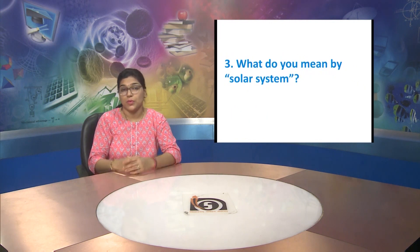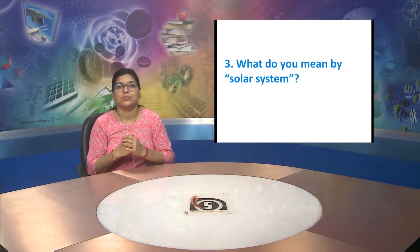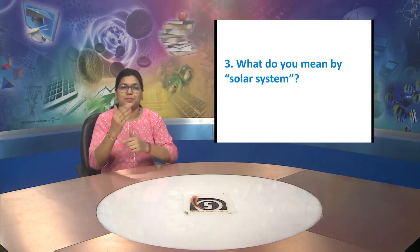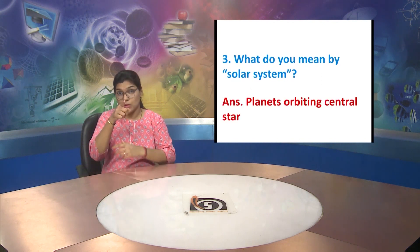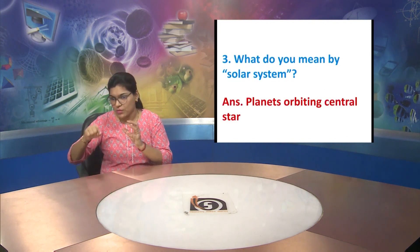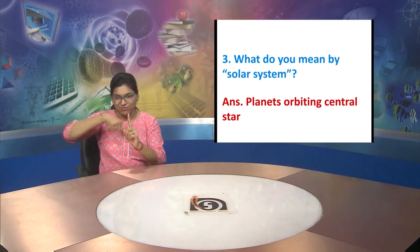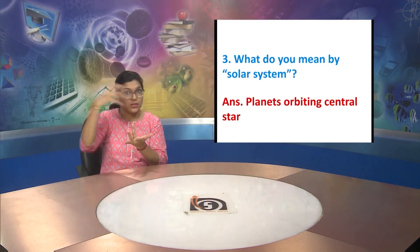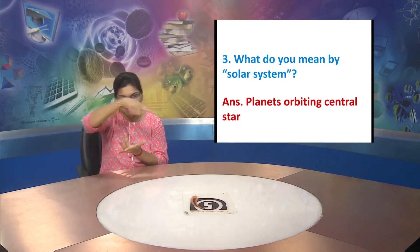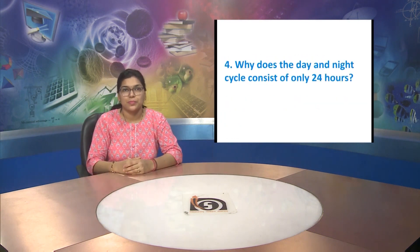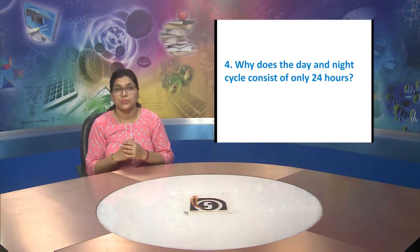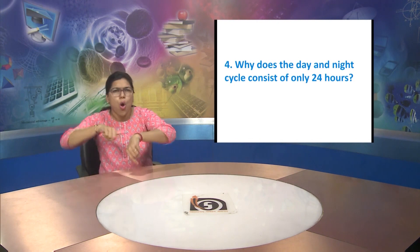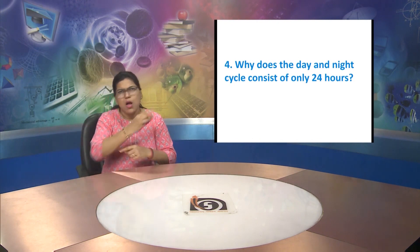Question three: what do you mean by solar system? Planets, their orbits, rings, and the central star together make up the solar system.